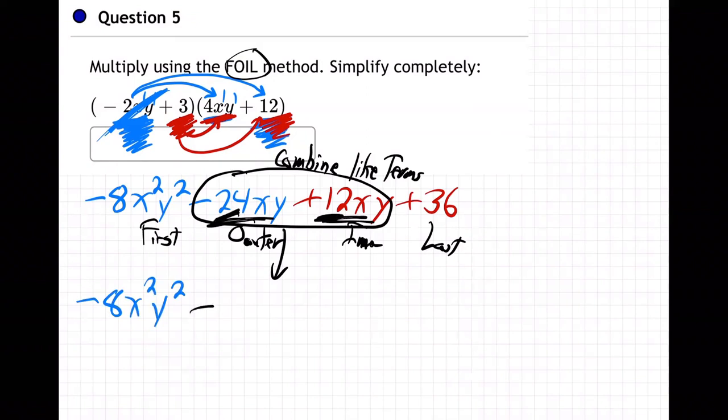Now, what is minus 24 plus 12? It's going to be minus 12. And then the 36 at the back is still there. And we're done there. So, you see what happened in the middle? The minus 24xy and the plus 12xy made minus 12xy.